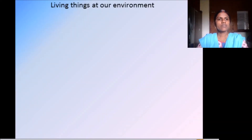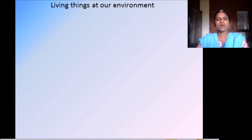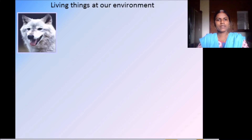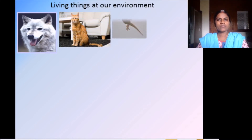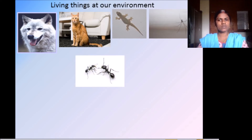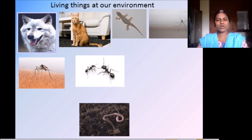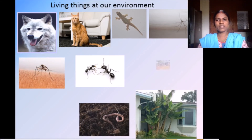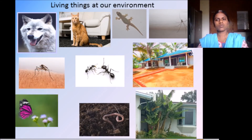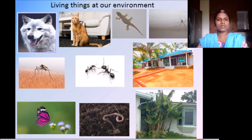Let us see living things in our environment. For example, we are dwelling in our house. Along with us, a cat, or a dog, or a lizard, a spider, an ant, a mosquito will be there — we might have seen these at our house. And in our garden we may see an earthworm in soil, a banana tree, a coconut tree, a pot with a rose plant, a butterfly, or sometimes bugs.